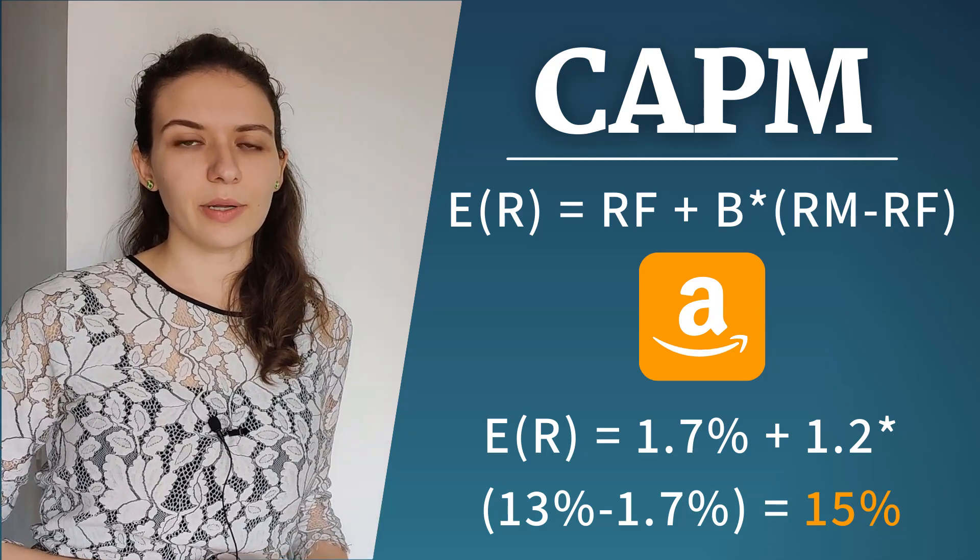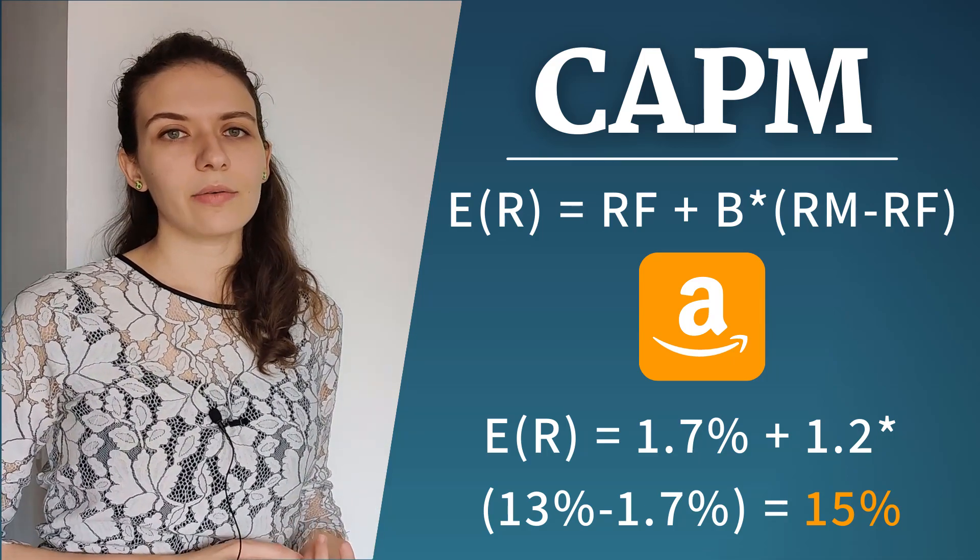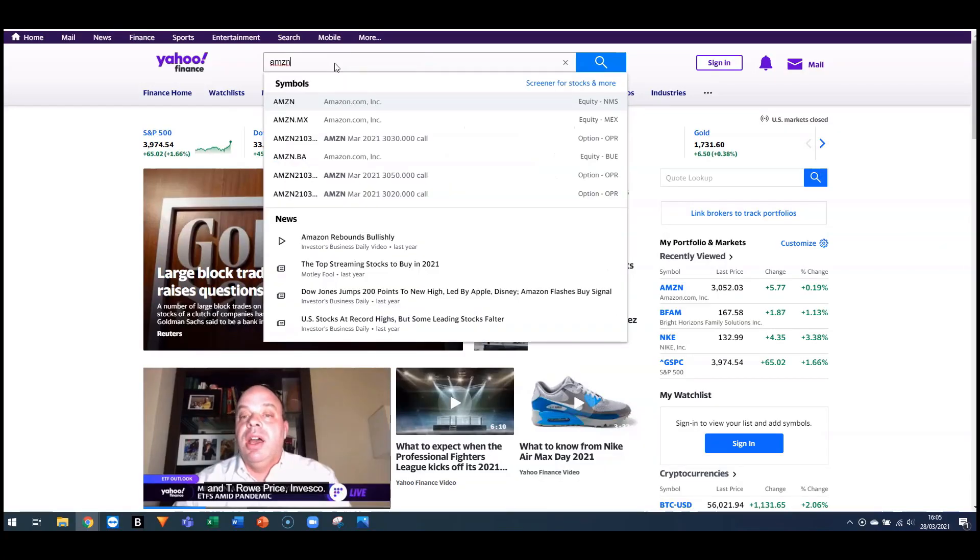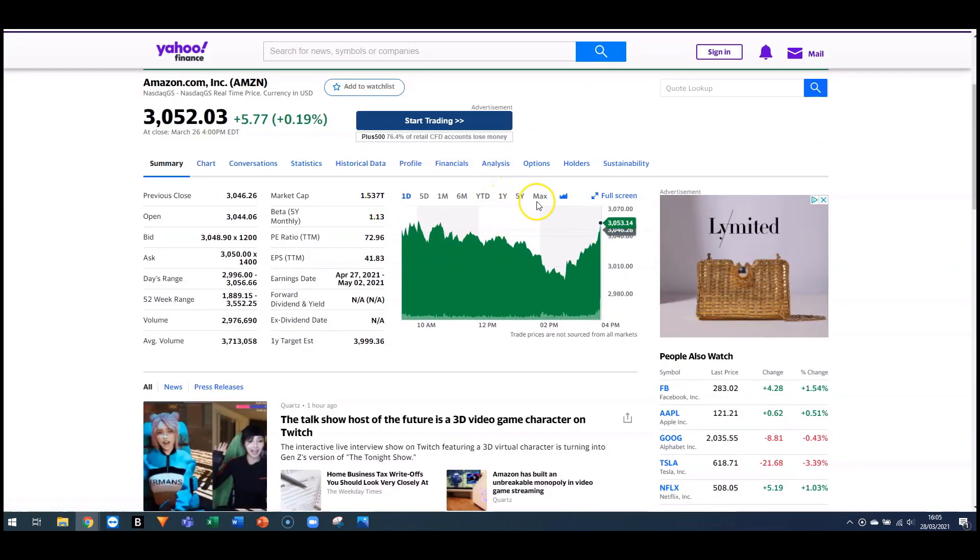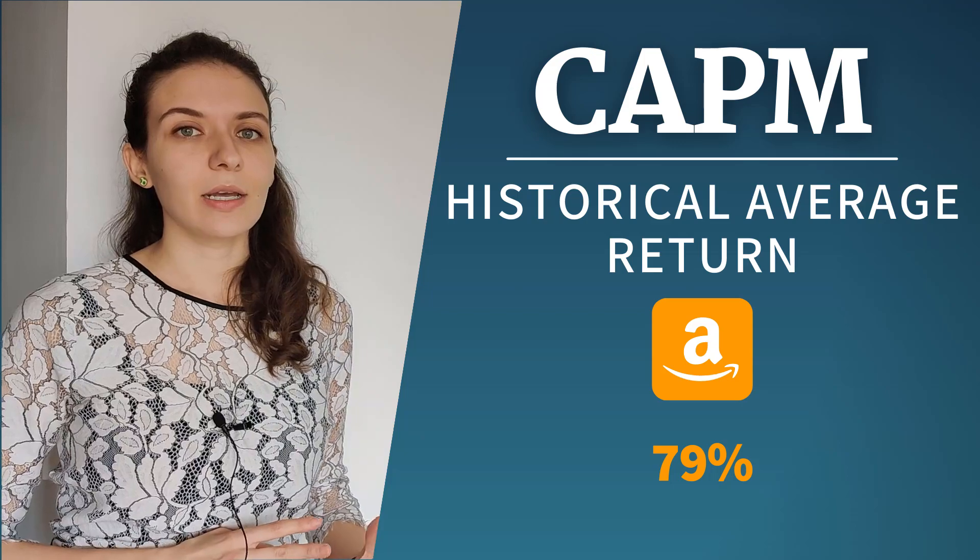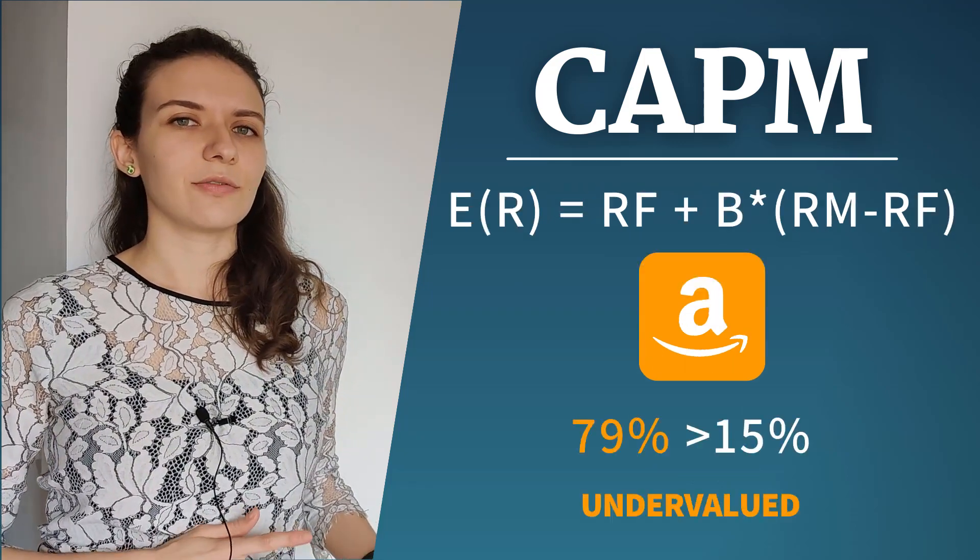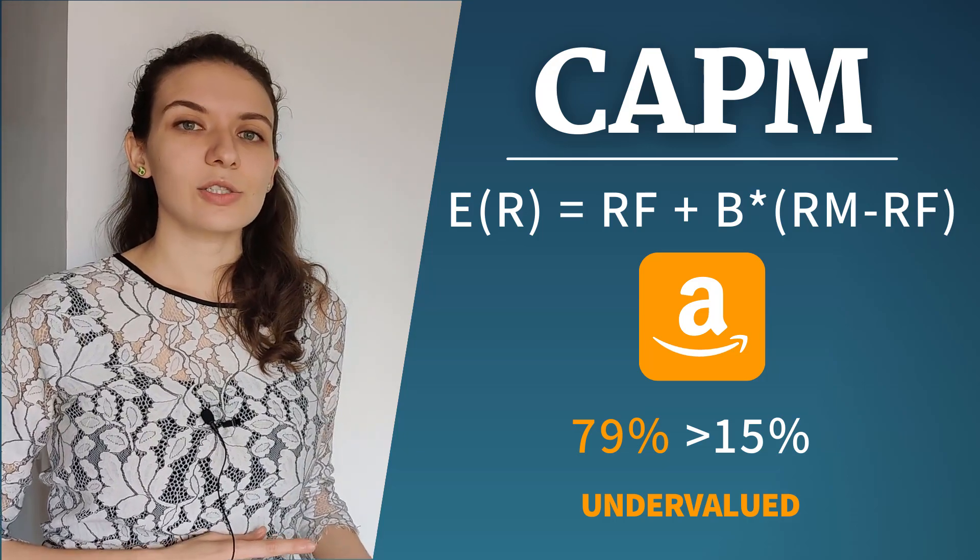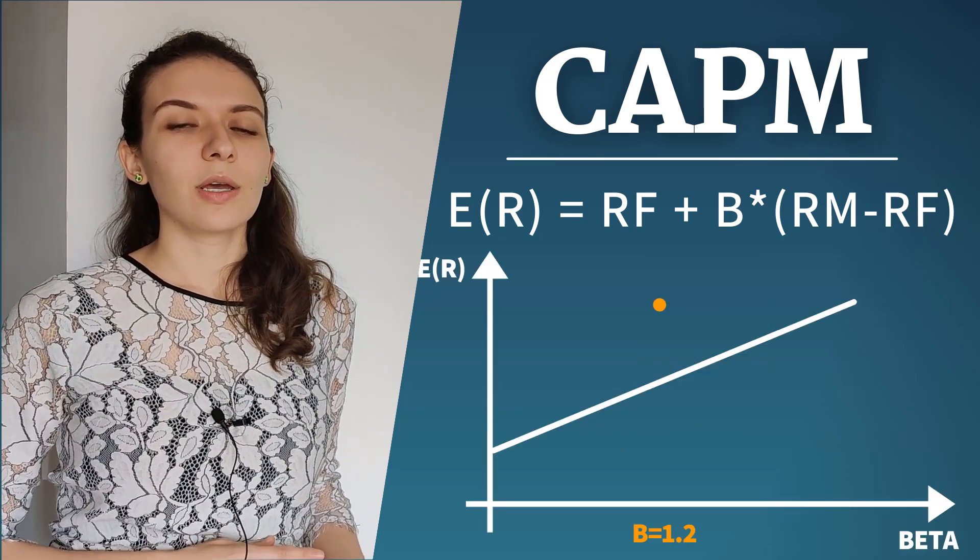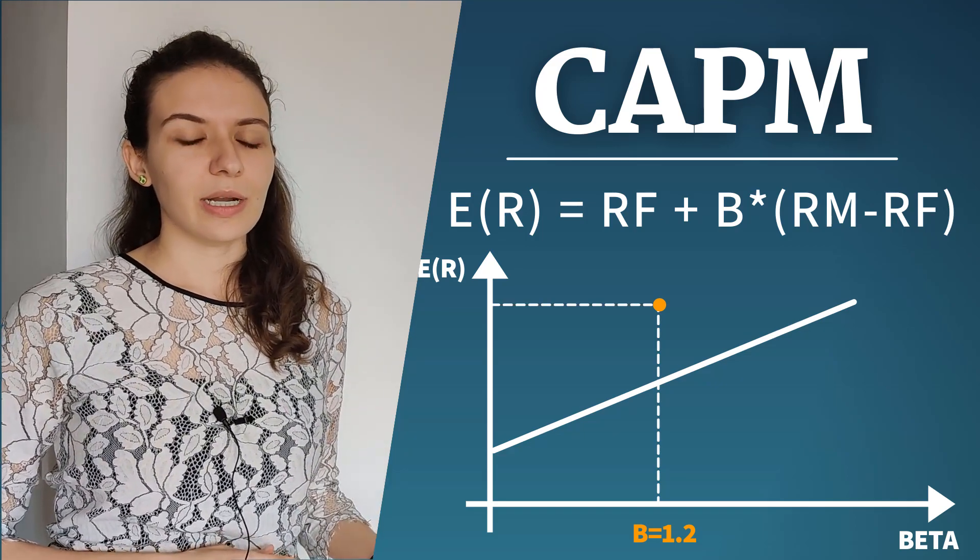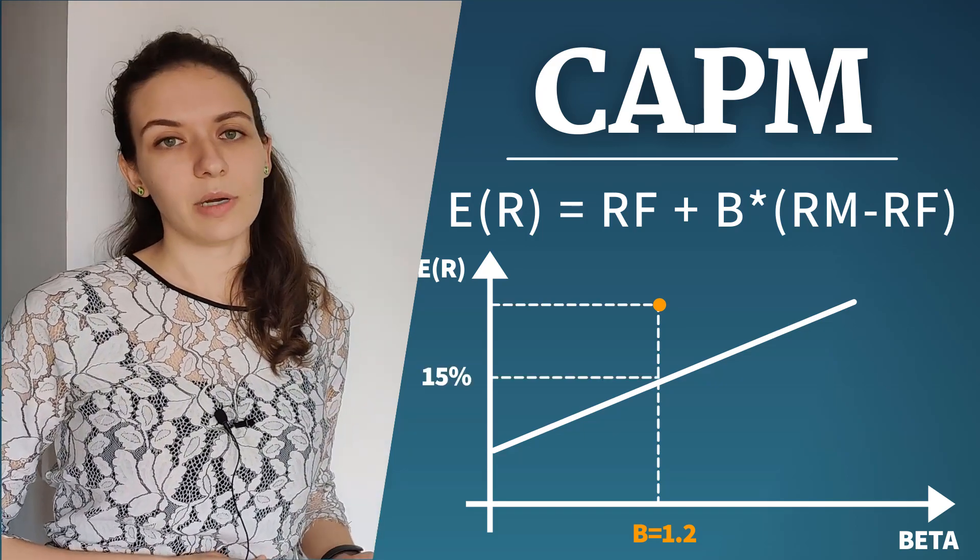Then we can compare this theoretical number with the actual average return using historical data. So if we go back 20 years and we calculate what the average return on Amazon is we will find that that number is 79% which is much higher than the 15% that we got out of the CAPM. That tells me that the stock is undervalued because for that level of beta it's giving me a much higher return, a much higher compensation for its market risk.